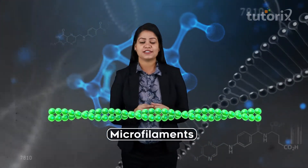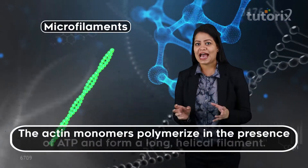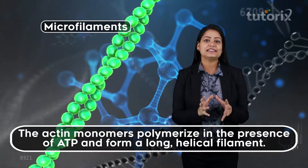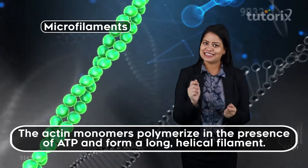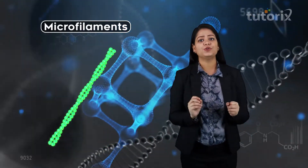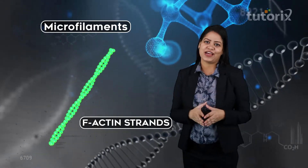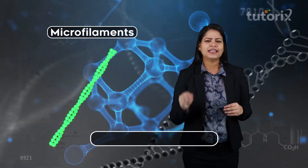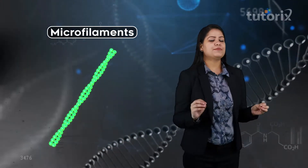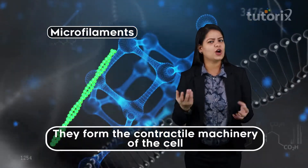The microfilaments are made up of monomers of the protein actin, and these monomers polymerize in the presence of ATP to form a long helical structure, which is why they appear as a periodic beaded arrangement inside a cell. A microfilament is a double-stranded structure with two helical grooves running along its length; these strands are also called F-actin and actin strands. The microfilaments are associated with the contractile protein myosin, and this ability allows them to form the contractile machinery of the cell, which aids in motility or movement.